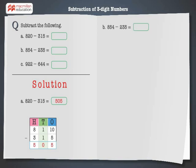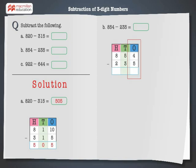854 minus 235. Arrange the digits in 100s, 10s, and 1s columns. Subtract the 1s first. 4 is smaller than 5, hence we cannot subtract 5 from 4. Therefore, regroup 854 as 800, 4 tens, and 14 ones.